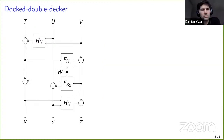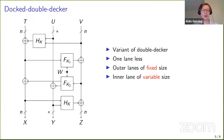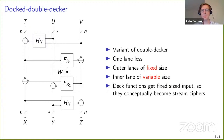We also have the docked double-decker, a variant of the double-decker where two lanes are merged together and some input is moved around. Again, the outer lanes are fixed size and the inner lanes are of a variable size. What's interesting in this case is that the DAG functions only get a fixed-sized input, so we can actually conceptually view them as stream ciphers, which are more commonly used than the DAG functions.